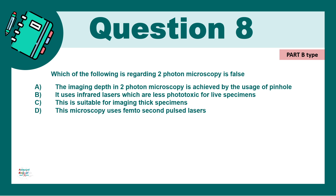Question 8: Which of the following regarding two-photon microscopy is false? A) The imaging depth in two-photon microscopy is achieved by the usage of a pinhole, B) It uses infrared lasers which are less phototoxic to live specimens, C) It is suitable for imaging thick specimens, D) The microscopy uses femtosecond pulse lasers. The correct answer is A — two-photon microscopy does not use a pinhole to achieve imaging depth.